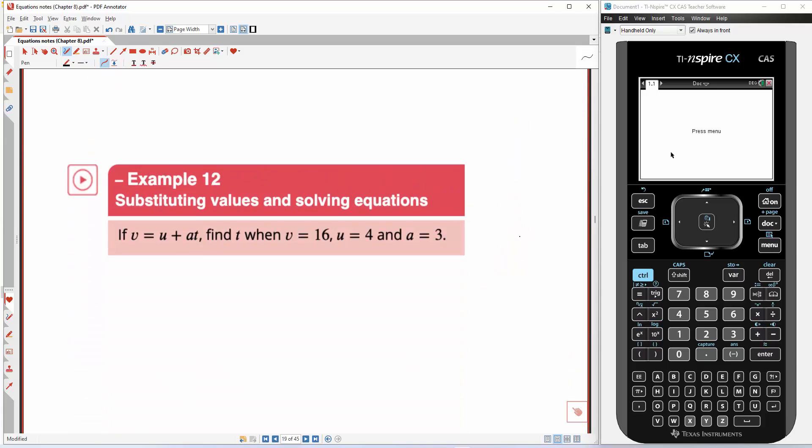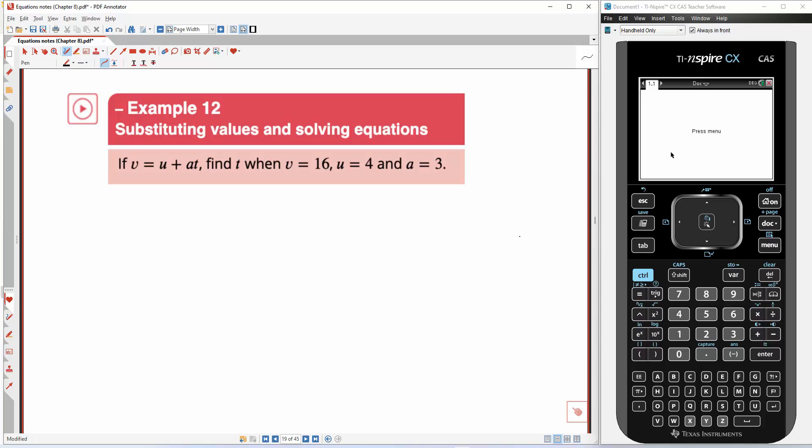All right, so on to an example. A more famous formula is v equals u plus a t. It's used in physics. What we want to do is find t when v is 16, u is 4, and a is 3.